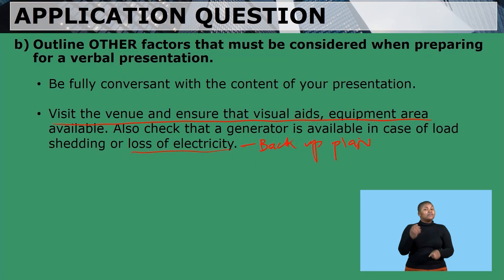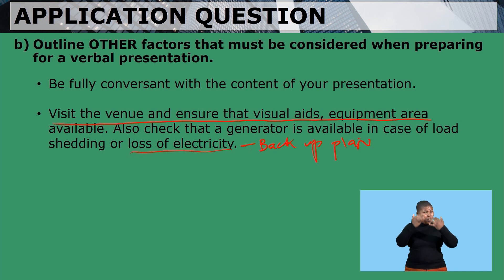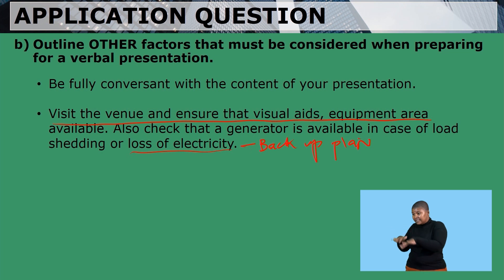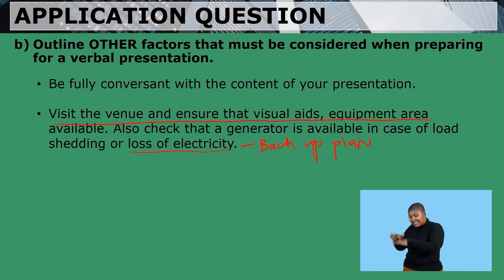You need to visit the venue and ensure that the visual aids and equipment are available. Also check that a generator is available in case of load shedding or loss of electricity. Go there beforehand, before the start of the presentation, and make sure everything is fine. Check that the furniture is readily available to accommodate everybody — you don't want only 10 chairs for 20 or 30 people. Ensure all equipment is in order to avoid chaos.